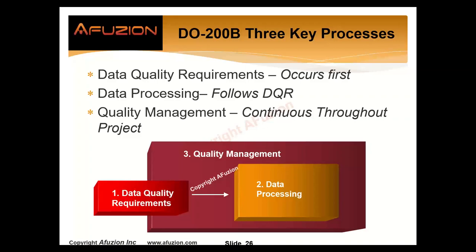This is a high-level, one-hour summary of aFusion's two-day training — we're just touching the top level. If you want private training, just let us know. DQR comes first. You must define the data quality requirements. Then, and only then, after you've defined, validated, and documented them with review, do you define and perform the data processing. In the background, you have a continuous process of quality management based on your QMS.